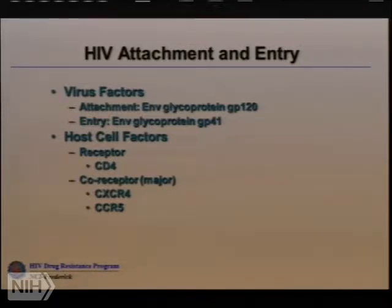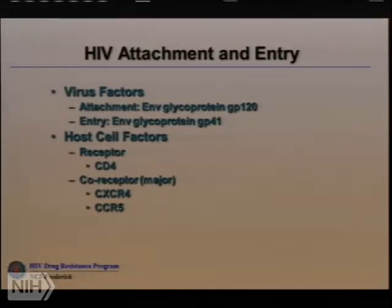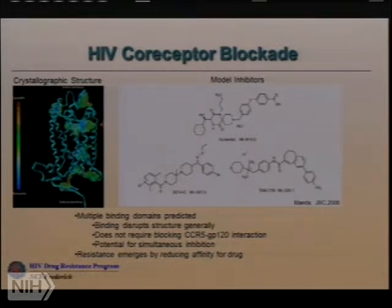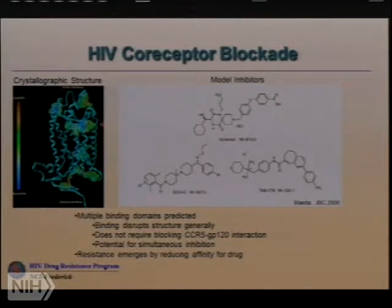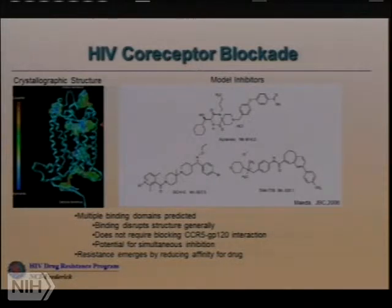Host cell factors must also bind to GP120, CD4, and either CXCR4 or CCR5. Unless it engages both the receptor and the co-receptor, it's no deal. So blocking that step is a good idea. The inhibitor that's available now — FDA approved — is a drug called Maraviroc, which blocks the interaction between the HIV envelope and the CCR5 co-receptor. Even though the CD4 receptor has been known for probably fifteen years longer, there are not good drugs to block that infection.